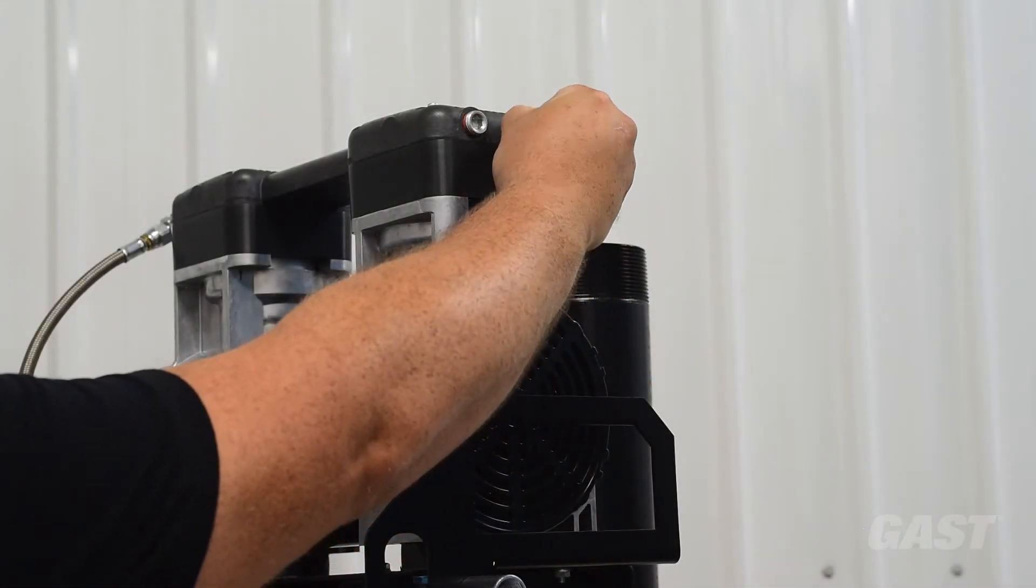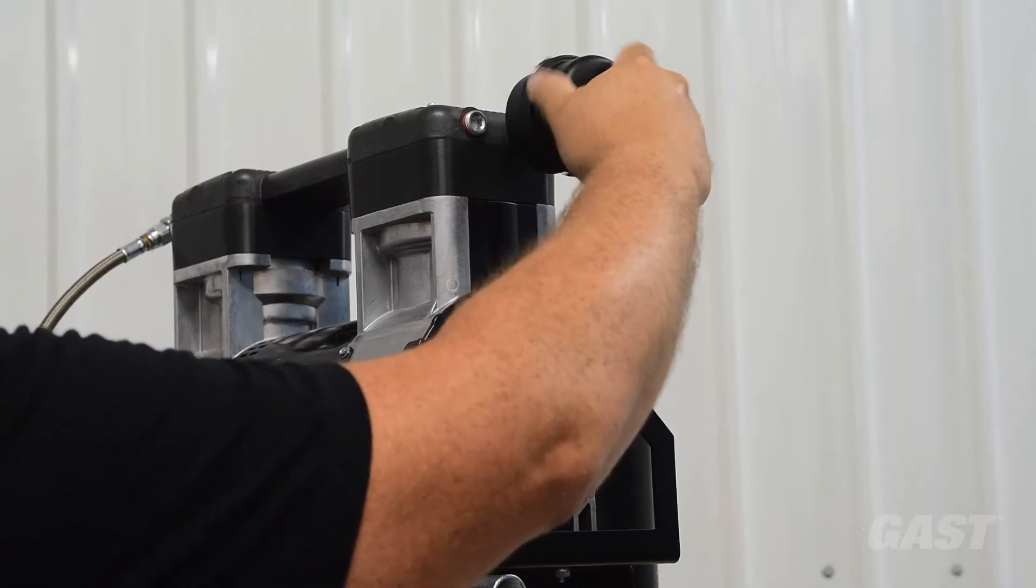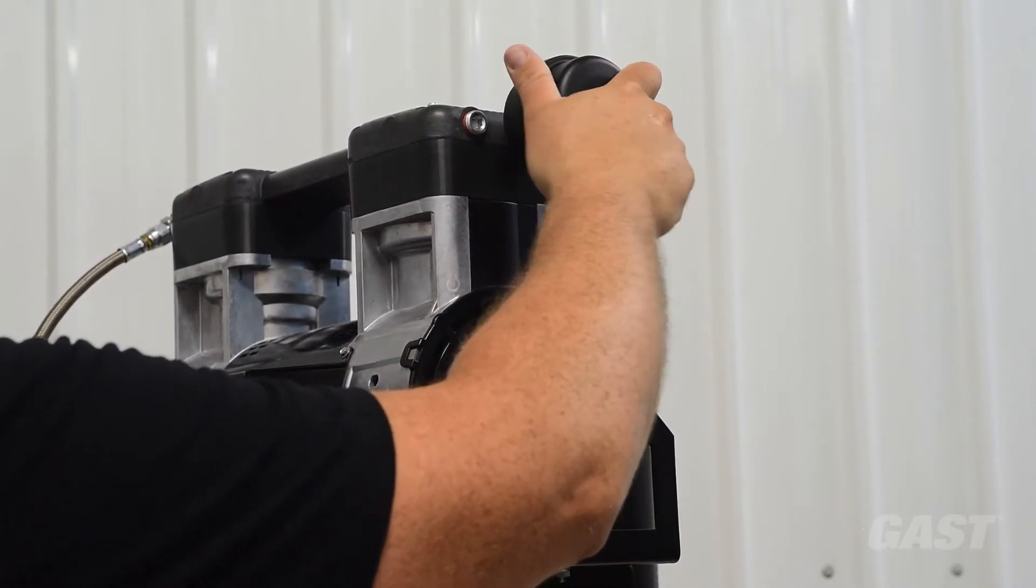Remove the plastic inlet plug on the compressor head and install the inlet filter into the inlet port of the compressor. Tighten only by hand.